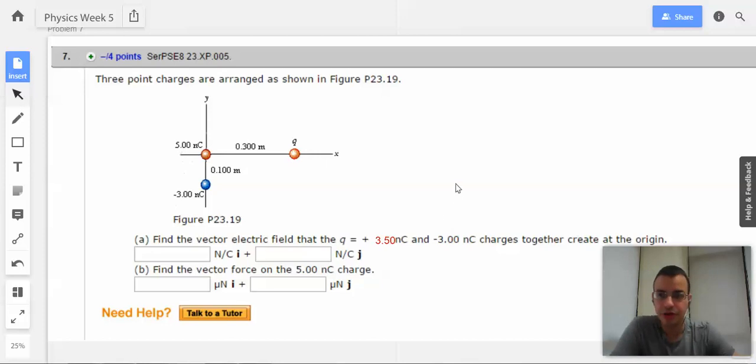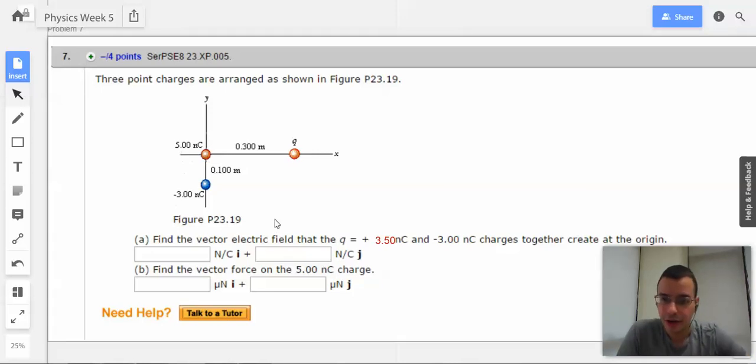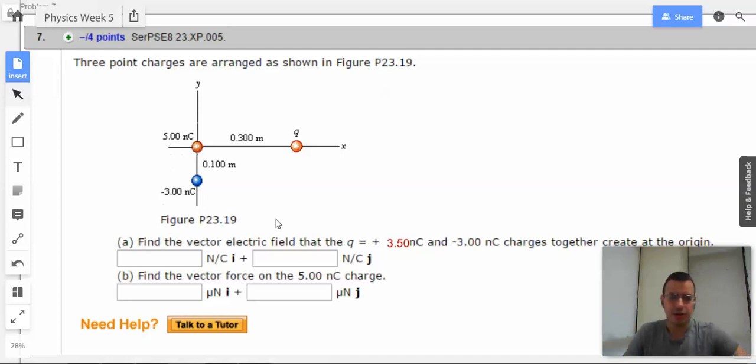Problem 7. Three point charges are arranged as shown in figure P23.19. Wow, okay, got it. Okay, I could have just said the figure below, getting easier.